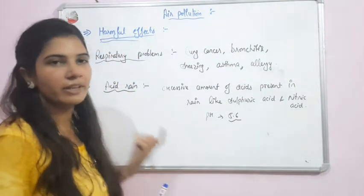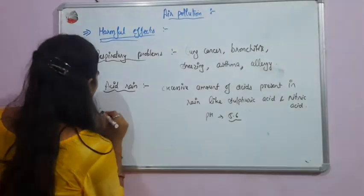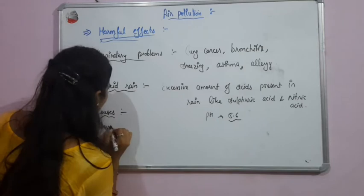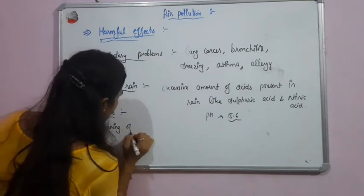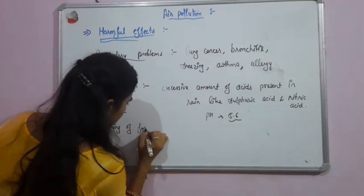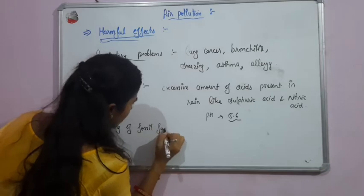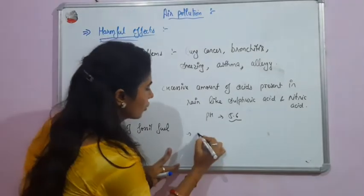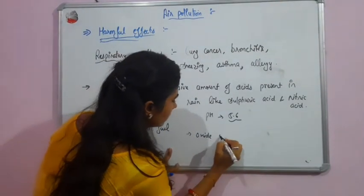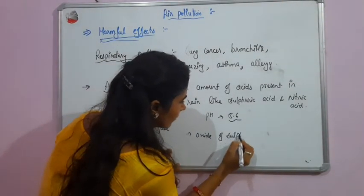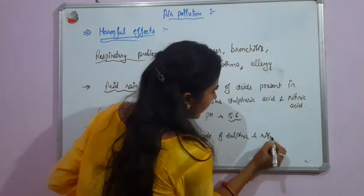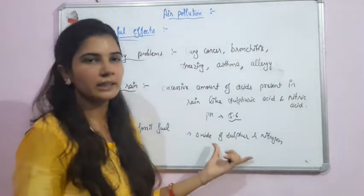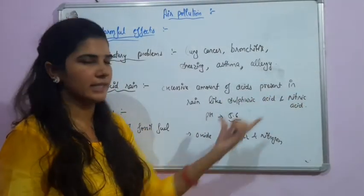If we talk about causes of acid rain, burning of fossil fuels releases harmful gases such as oxides of sulfur and nitrogen. These harmful gases react with water and form sulfuric acid and nitric acid.